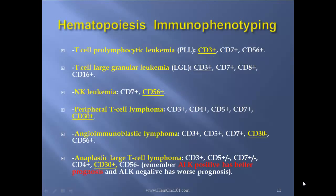T cell prolymphocytic leukemia PLL will be CD3 positive, CD7 and CD56 positive. T cell large granular lymphocyte leukemia LGL — CD3 positive, CD7, CD8, CD16 positive. NK cell leukemia — remember CD56. Peripheral T cell lymphoma — CD3, CD4, CD5, CD7 positive, and importantly CD30 positive. Angioimmunoblastic lymphoma — usually T cells — will be CD3, CD5, CD7 positive, but CD30 negative.